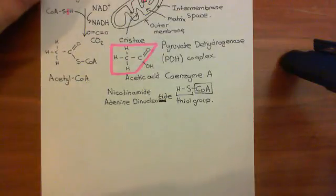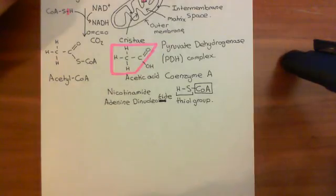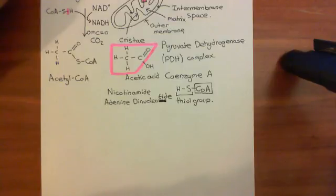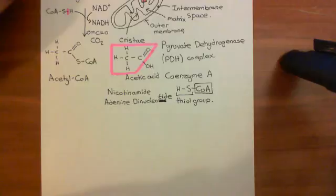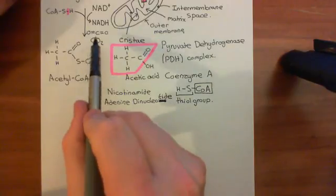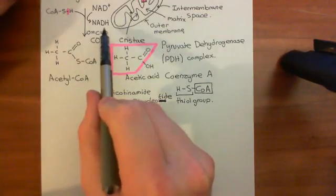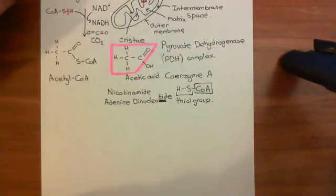Welcome to this next video in which we are discussing the citric acid cycle. We've just discussed what is sometimes called the link reaction, which takes pyruvate in the intermembrane space and turns it into acetyl coenzyme A, which is on the matrix side of the inner membrane of the mitochondria. In that process, it generates a molecule of reduced NAD and also CO2.